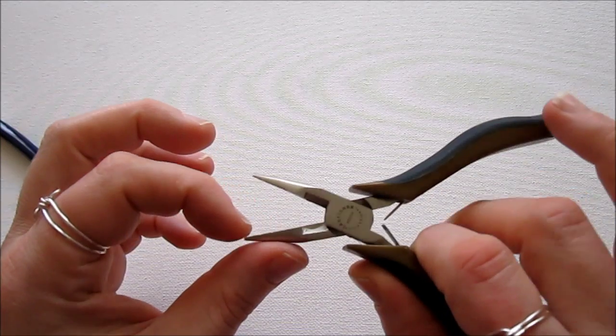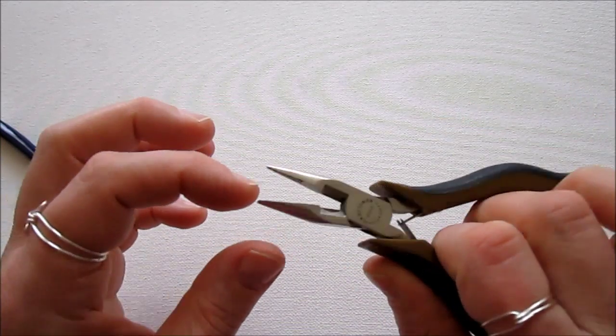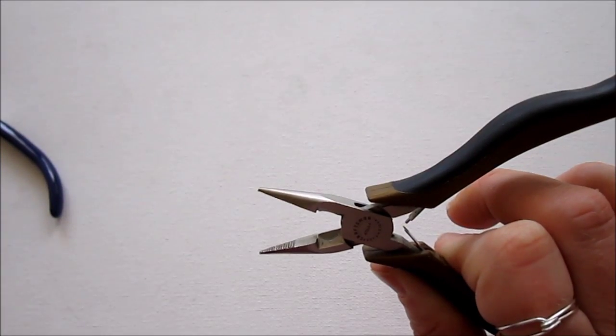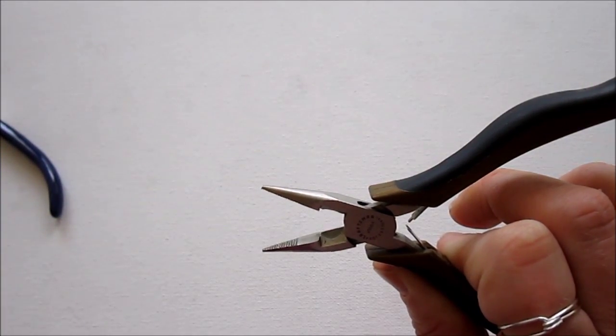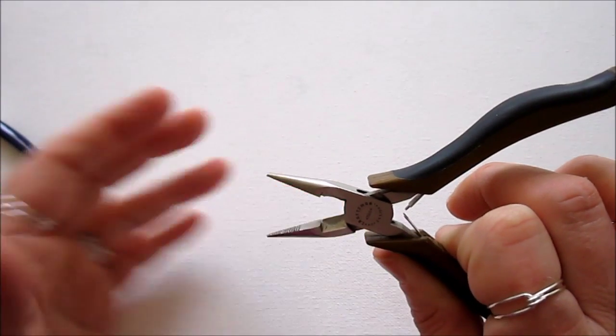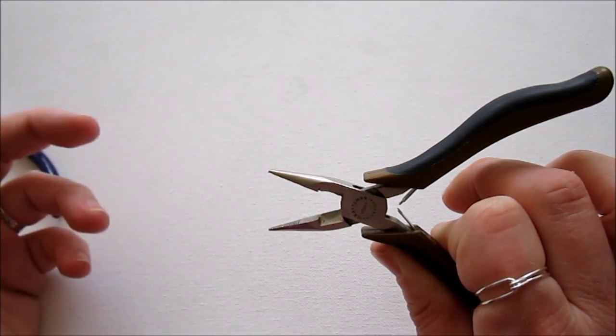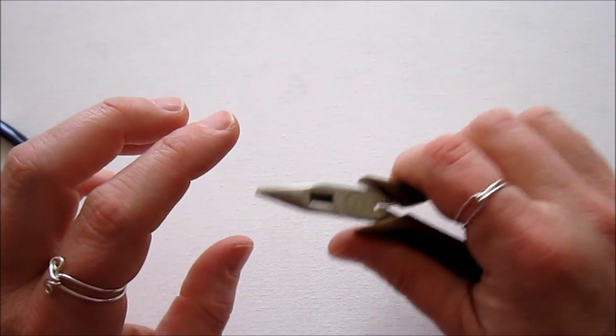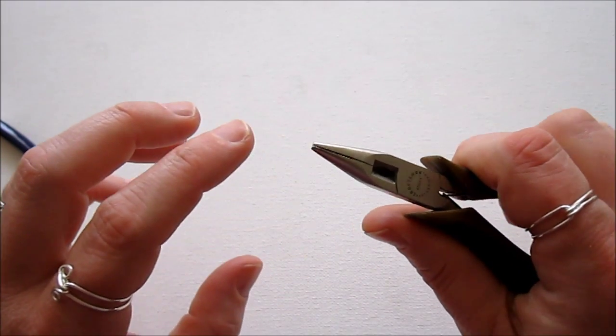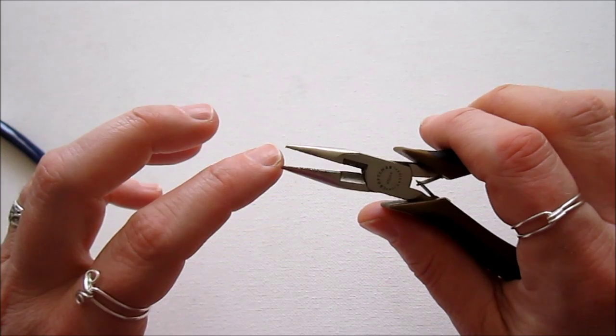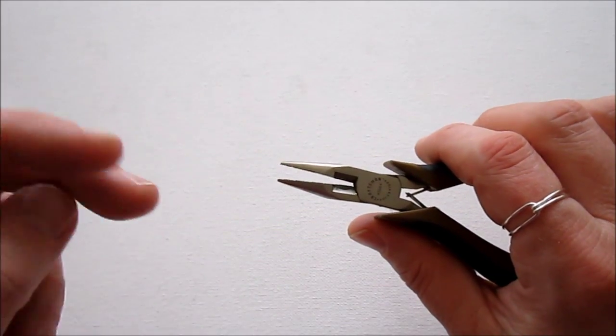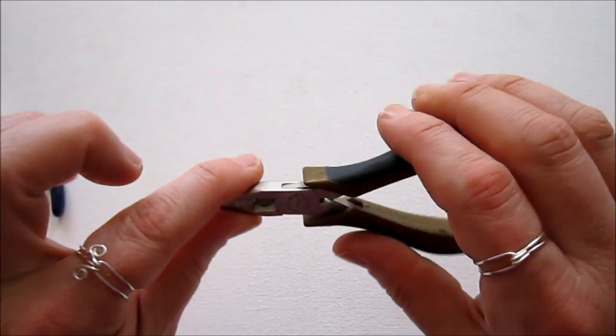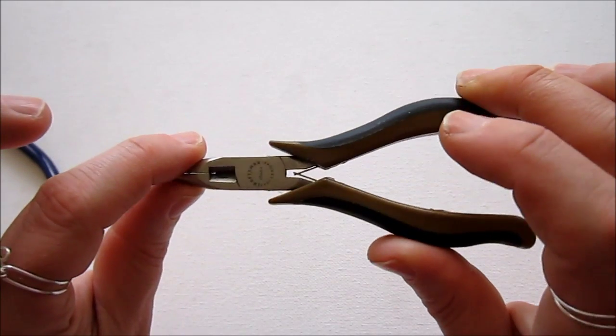And the reason you don't find them for jewelry making is because they do have teeth on them. And in most cases, you would never want to use these with jewelry making because they will leave marks on your wire. However, they make pulling wire very secure, and we'll just be using them on the ends of wires. And we'll be cutting that part off. So these are my secret weapons.